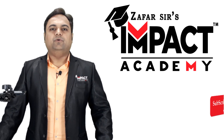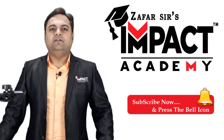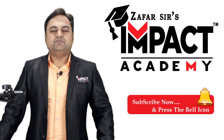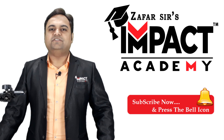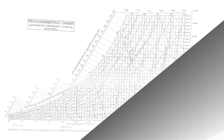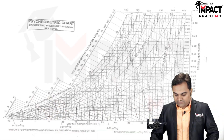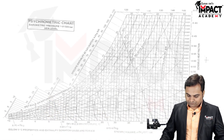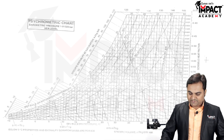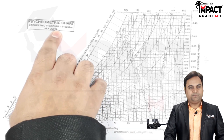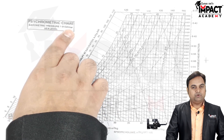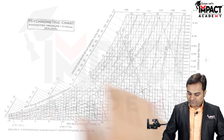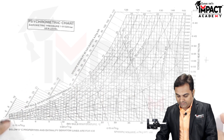Hi friends, in this video I'll be explaining the psychrometric chart. The psychrometric chart is made at atmospheric pressure which is 1.01325 bar at sea level.